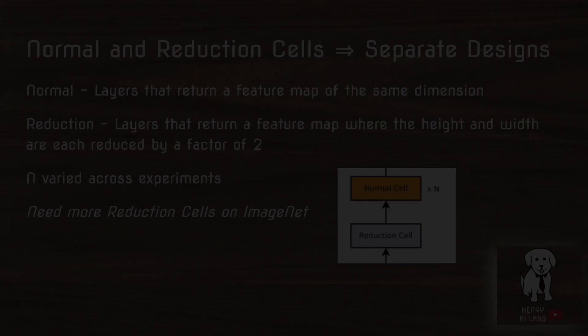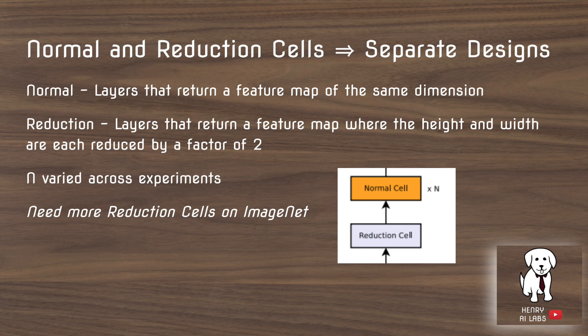The normal layer returns a feature map of the same dimension. In convolutional layers, if you take an input image of 32x32 height-width and slide a 3x3 kernel over it, you produce a 30x30 output due to the sliding window effect. Normal layers return the same spatial resolution, while reduction layers reduce the height and width by a factor of two. In some designs, the normal cell is repeated N times before each reduction cell, and this N is a hyperparameter of the meta-learning algorithm.